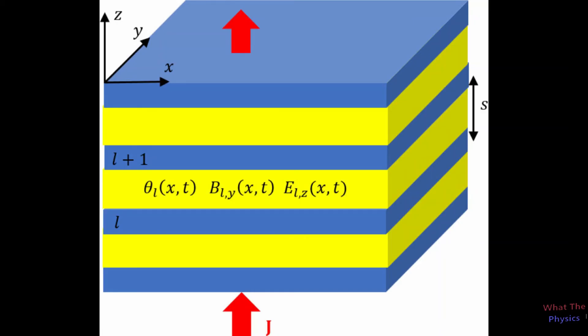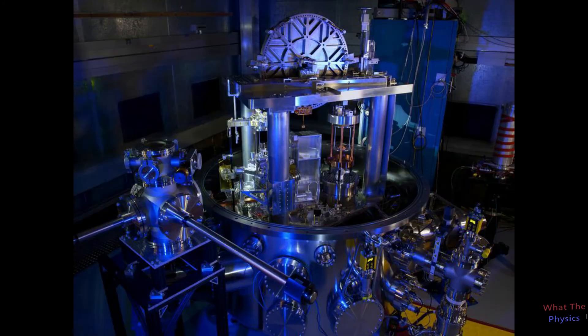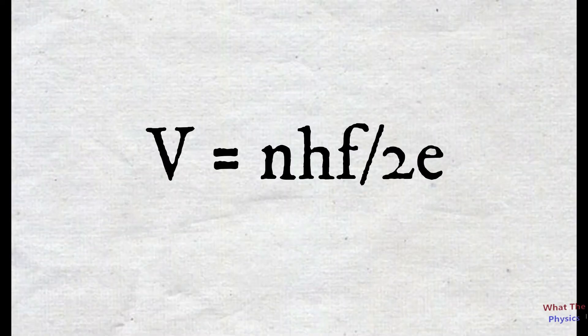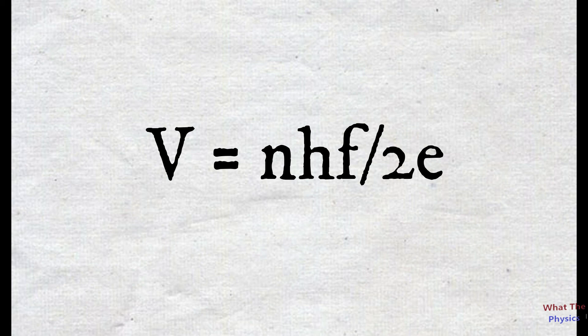So by using a lot of Josephson junctions, we can create any voltage precisely. So in Kibble balance, we use a stack of 100,000 Josephson junctions and create voltage V. So here it turns V to be equal to N × hf / 2e.